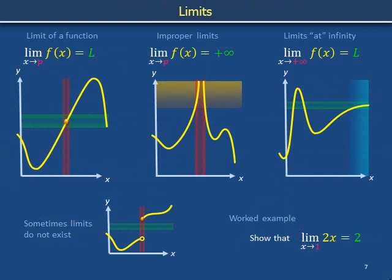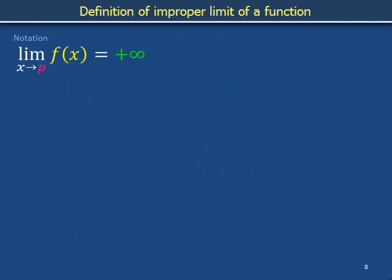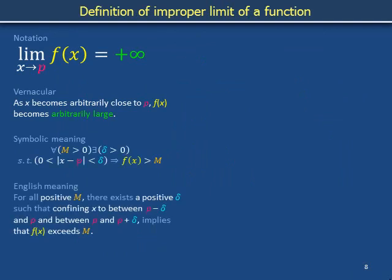Some functions have plots f of x versus x that become arbitrarily large. For these situations, we need to define improper limits. This notation reads: the limit as x approaches p of f of x is infinity, roughly meaning that as x becomes arbitrarily close to p, f of x becomes arbitrarily large. The symbolic shorthand and unpacked English mean: for all positive M, there exists a positive delta such that confining x to between p minus delta and p, and between p and p plus delta, implies that f of x exceeds M.